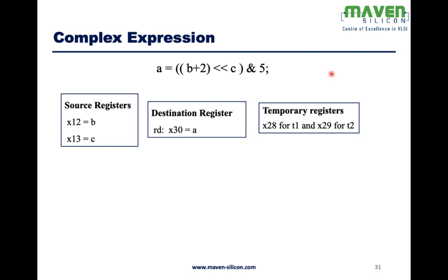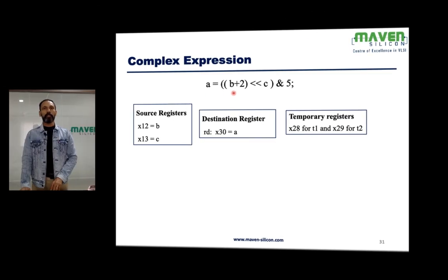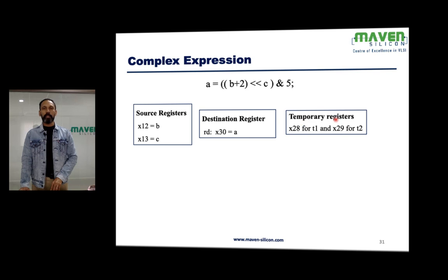Let's look at a complex expression: a = (b + 2) left-shift c, then AND with constant 5. There are two source registers for variables b and c — X12 and X13 — and one destination register for variable a, which is X30. We also need temporary registers: X28 for temporary value t1, and X29 for temporary value t2.